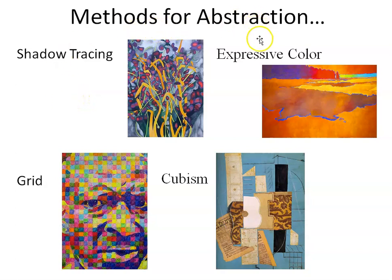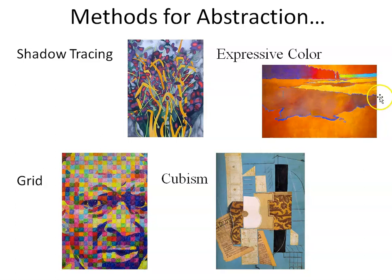Now we're going to talk about how to make abstraction. You can do things like tracing the shadows and looking at the negative spaces of where things are. You can use color in a more expressive way. Like this here is a tree line, there's some land, this looks like some water. Water is not normally orange — at least not naturally. But when you choose colors that evoke an emotion and have a response in the viewer, maybe the water is orange this time. Maybe that warm, soft feeling is what you want the viewer to see.